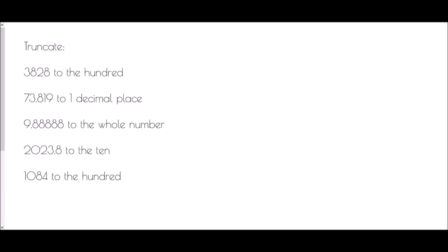We're going to begin with some questions where we're asked to truncate some numbers. We're going to truncate 3828 to the hundred. The idea here is that we need to first of all identify where in the number the hundreds is. We've got 3800, so it is at this point where we are truncating. Truncating means to cut off, which means the thousands and the hundreds digits remain the same, and the tens and units just become zeros. When we truncate to the hundred, we get 3800.